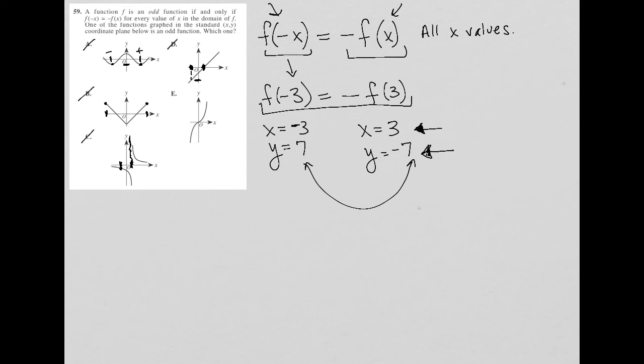So with that, process of elimination, E must be the correct answer. But let's just check it and see how it fits our strategy. So if, let's say, this was positive 3, and this was positive 7, and this here was negative 3, and this was negative 7.